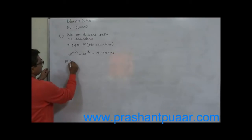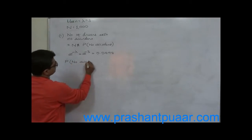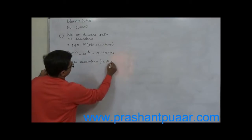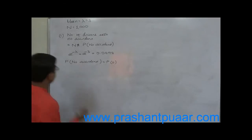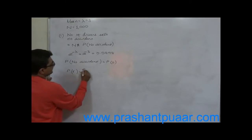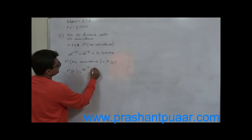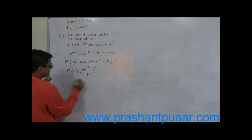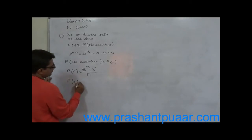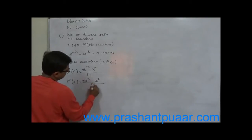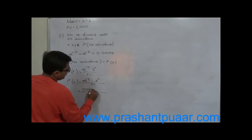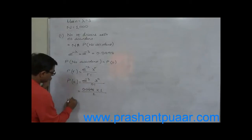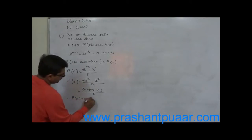The probability of no accident means P(0). The Poisson formula is: probability of r equals e raised to minus mean, multiplied by mean raised to r, divided by r factorial. Therefore, P(0) equals e raised to minus 3 into 3 raised to 0 upon 0 factorial, which gives 0.0498 into 1 upon 1. So P(0) equals 0.0498, which is simply e raised to minus mean.